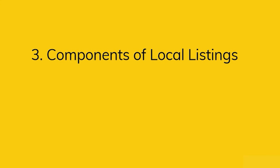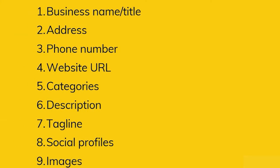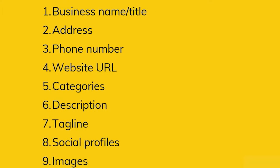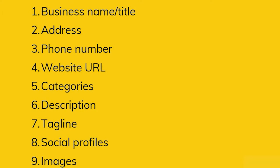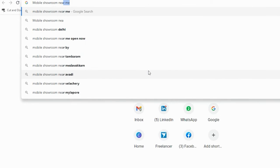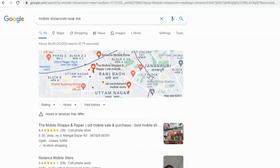Now you need to understand what are the components of local listing — what you need to put when submitting your business. There are hundreds of pieces of information about a business, but not all need to be put on this platform. There should be a certain format you should follow. Like business name — you should have the right business name. Sometimes people put location names and keywords in the name. That is not correct. Let me show you some examples.